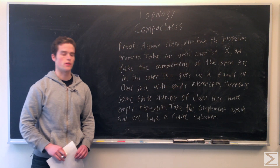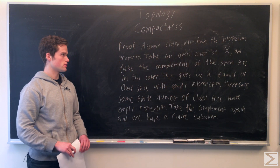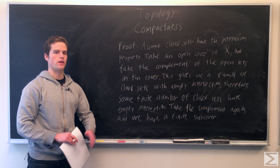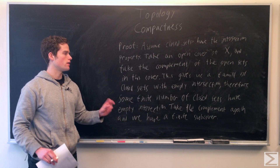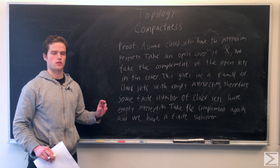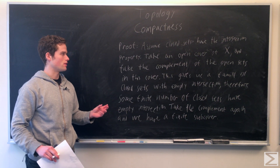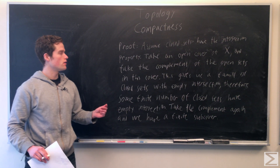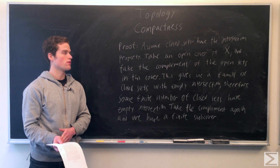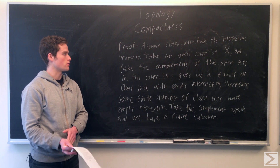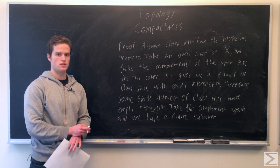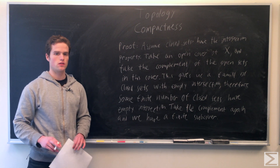Now we assume that for any family of closed sets with the finite intersection property — any finite intersection is non-empty — the intersection of all the sets must also be non-empty. We take an open cover of X and show we can find a finite sub-cover. Taking the complement of the open cover gives us a family of closed sets with empty intersection.